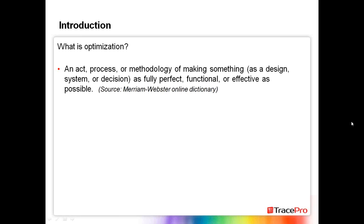So, what is optimization? It's an act or process or methodology of making something — such as a design, a system, or a decision — as fully perfect, functional, or effective as possible. This is from the Merriam-Webster Online Dictionary. In our application, we're looking at using optical design software to optimize the shape of a lens, reflector, or light guide and make it match the optimization requirements we have.